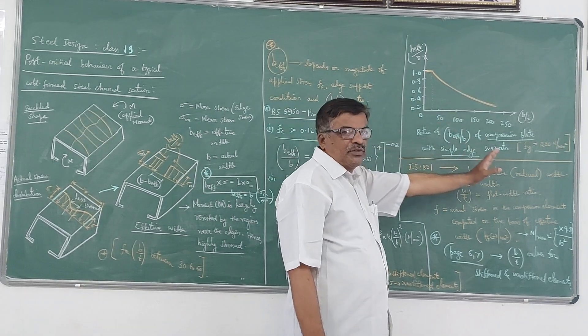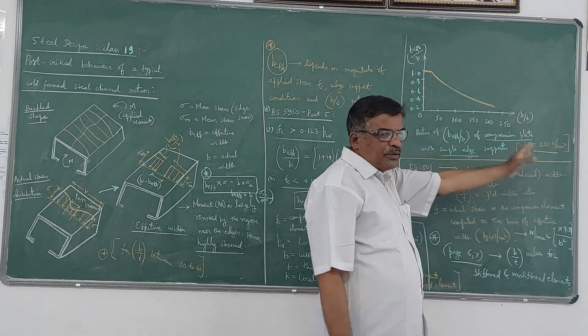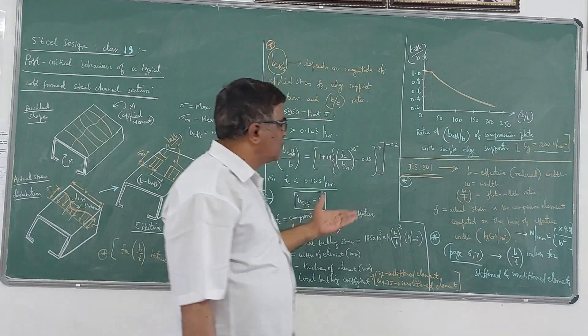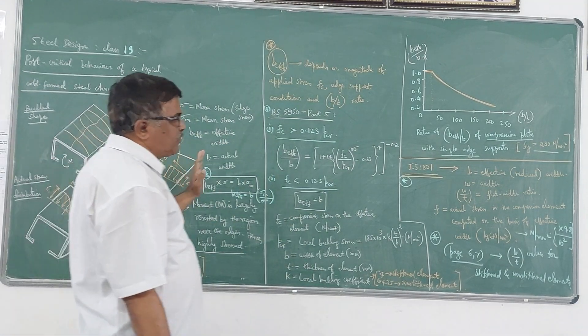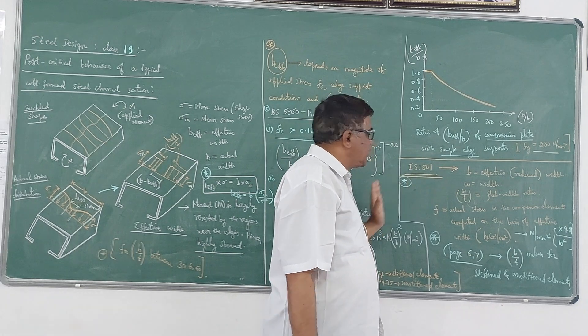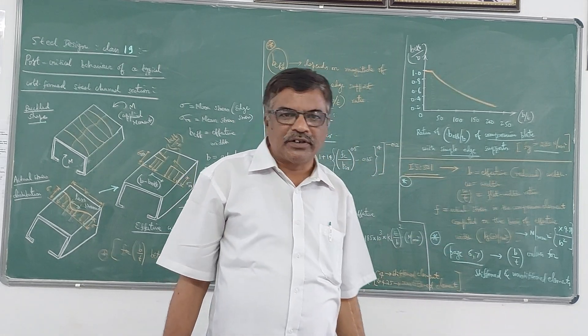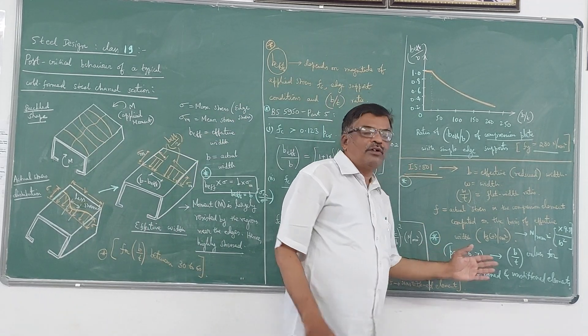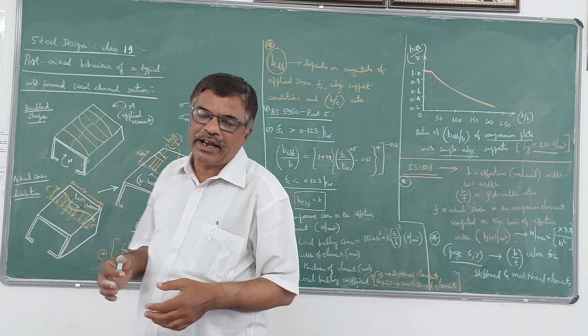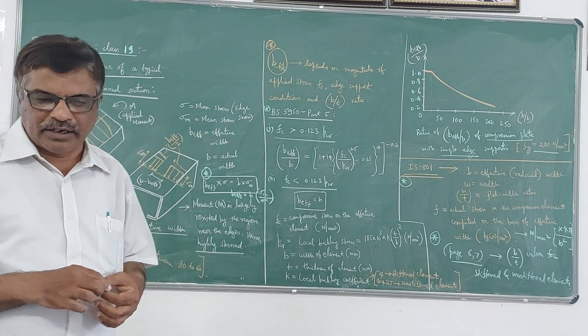And this is the graph which gives the relationship between B_effective to B and B to T. And in Indian code, the only notations are different. So B_effective is represented by B, B is represented by W, and W by T is called as the flat width ratio. And using the IS 801, you can always find out the load carrying capacity of a given cold-form steel section.